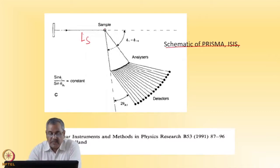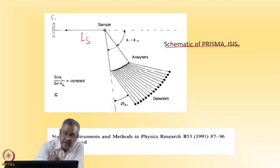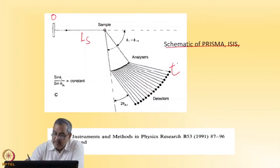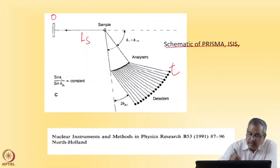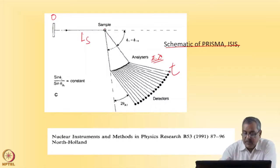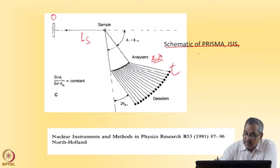What it does: starting from zero time, at time t, a neutron is detected. Knowing this time t, we know that from the sample at this angle, what is the energy or wavelength of the neutron being detected at this detector. Because I know the analyzer angle and I know the time, I can find the sample-to-detector distance.